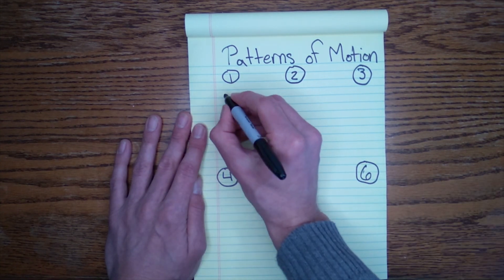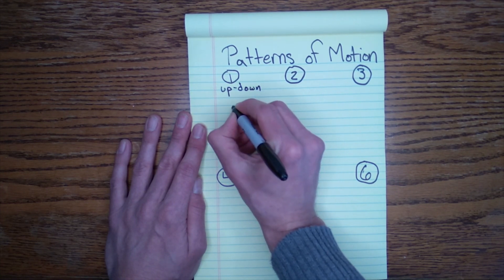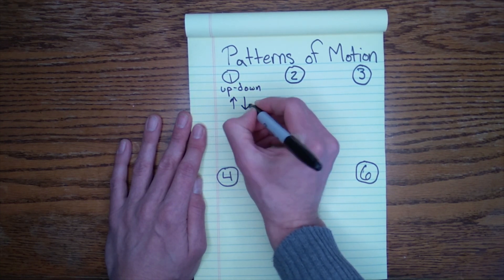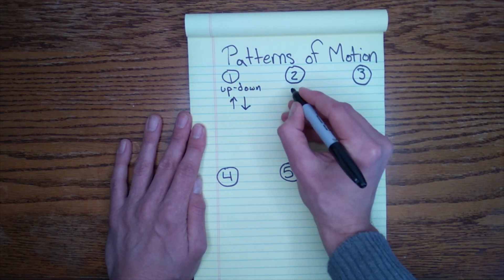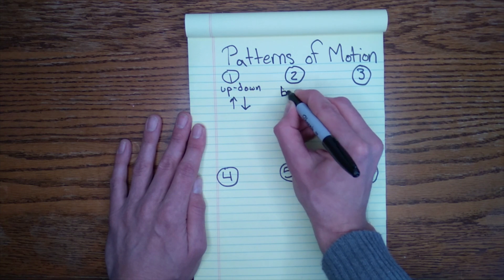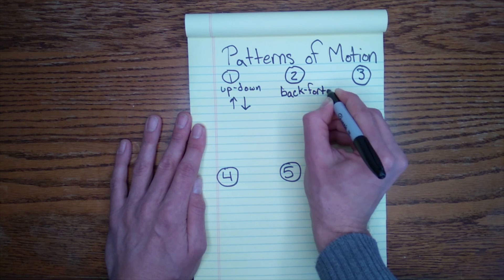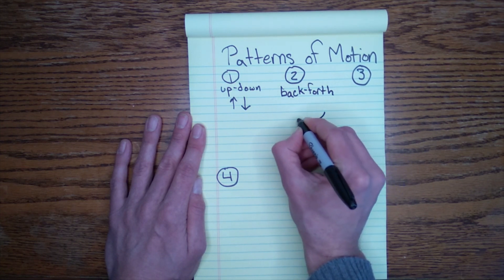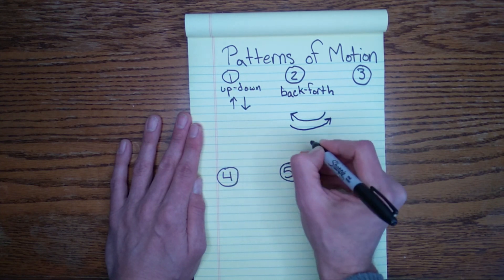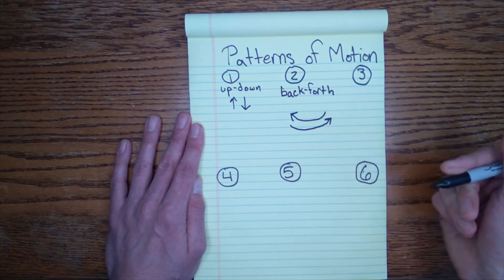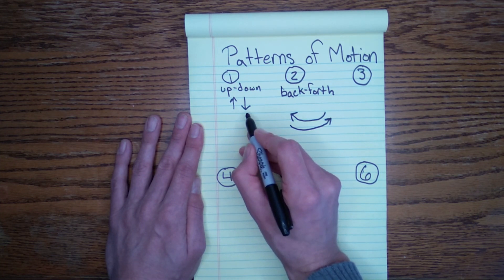Let's go ahead and leave a space for six different numbers. The first pattern of motion we described was up and down. Remember dribbling, throwing something up in the air and it coming down is an example of up and down. We also described back and forth like a swing. Remember these two show Newton's third law, that every action has an equal and opposite reaction.